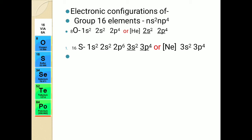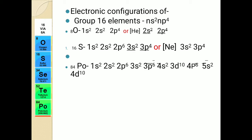We already studied this in 11th standard in detail — this is just a revision. As an assignment for this session, you have to write the electronic configuration of selenium (atomic number 34), tellurium (atomic number 52), and all elements of groups 16, 17, and 18. I will also write one more configuration — let us start with the last element of group 16, that is polonium with atomic number 84.